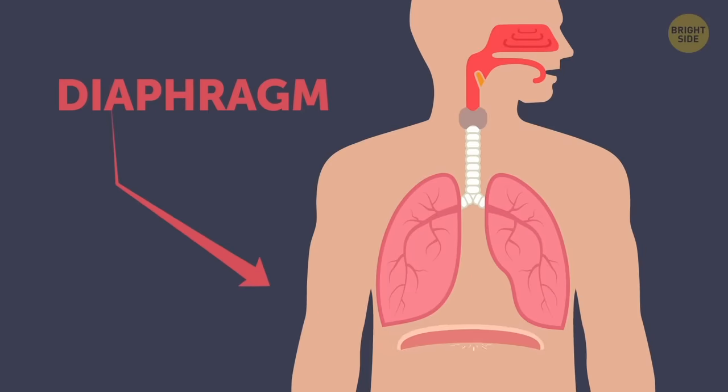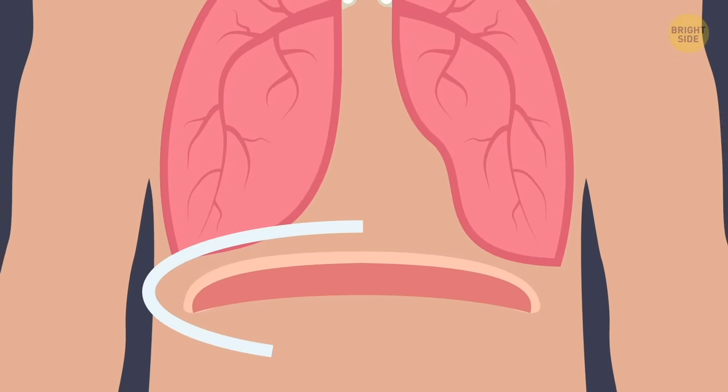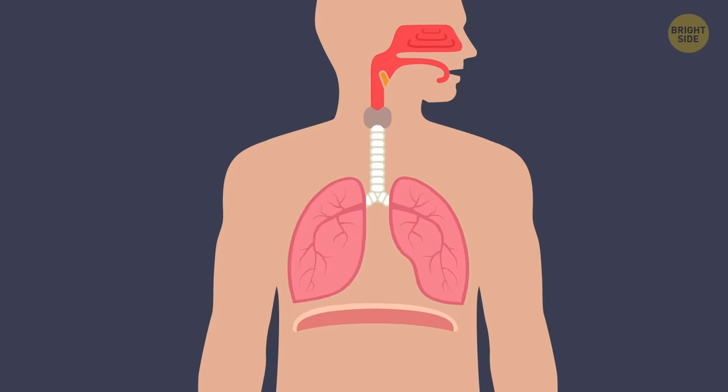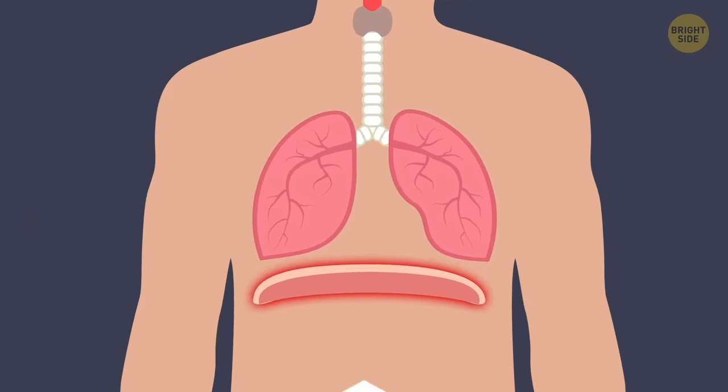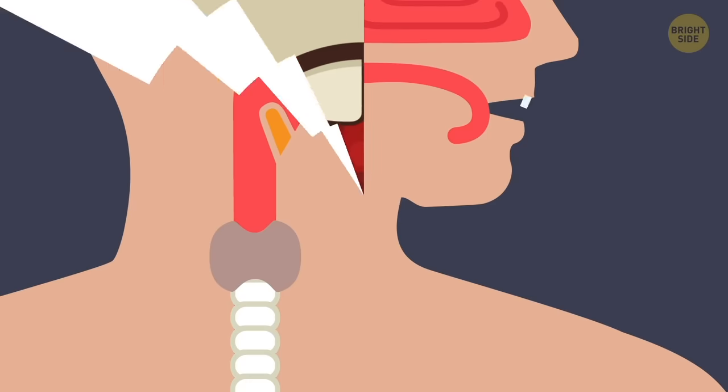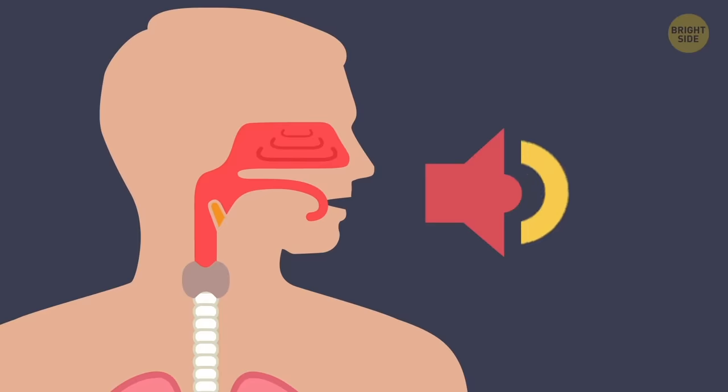Well, hiccups start in your diaphragm. You know, that sheet of muscle between your lungs and stomach that makes you inhale and exhale? If your diaphragm gets irritated, it'll spasm, causing you to unexpectedly suck in air. The air that's sent back up hits your vocal cords, and that's what creates the distinctive sound.